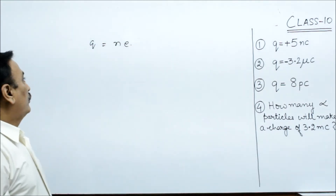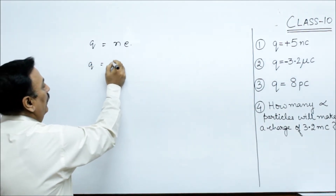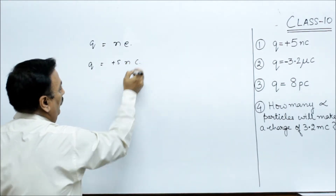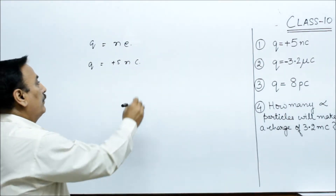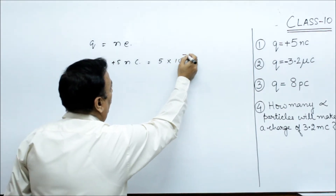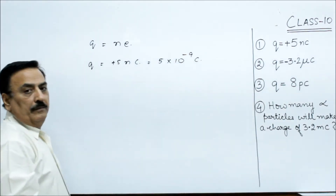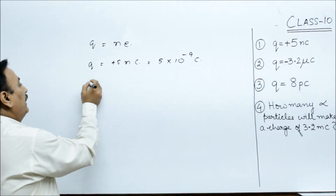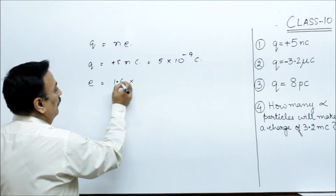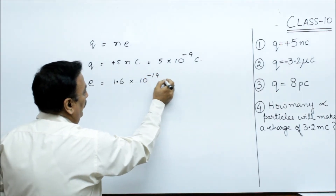So here we are given q is equal to plus 5 nC, and nC means 10 raised to the power minus 9 C. And the magnitude of the electronic charge is 1.6 into 10 raised to the power minus 19 C.